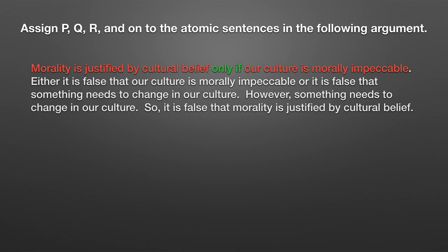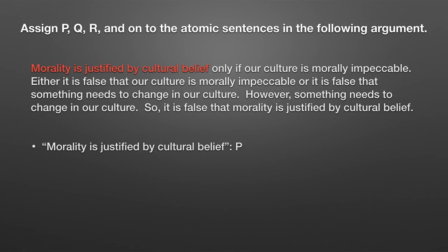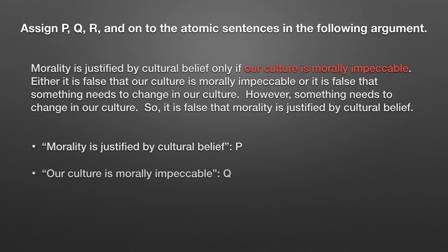This gives us two atomic propositions and our logical connective, telling us we have a conditional. Following rule one, the first atomic proposition — 'morality is justified by cultural belief' — is assigned P. The second atomic proposition — 'our culture is morally impeccable' — is assigned Q. So the first atomic proposition you encounter gets P, the second gets Q. Don't start with D or T. Start with P and go in succession.